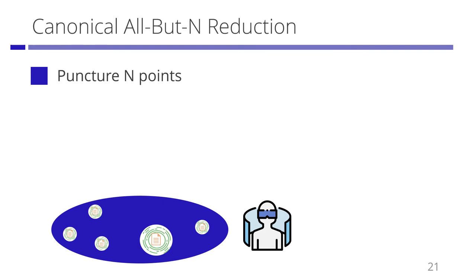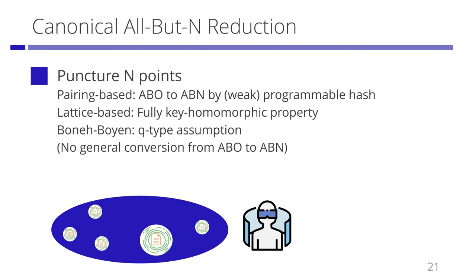In a canonical all-but-n reduction, we can puncture polynomially many points. The question is whether existing schemes have all-but-n reductions. The answer is yes, if we slightly modify them. If a scheme is pairing-based, we can achieve an all-but-n reduction by using weak programmable hash functions. In the lattice-based cryptography case, we can achieve it by using the fully key homomorphic property. In the Boneh-Boyen IBE or signature case, we can achieve it by using Q-type assumptions. Unfortunately, we do not have a general conversion from all-but-one to all-but-n reduction, but we can achieve all-but-n reductions for most cases of public key encryption, signature, and identity-based encryption. Beyond IBE, we do not know how to achieve an all-but-n reduction.